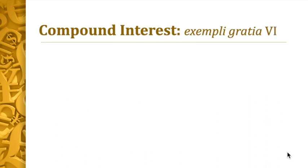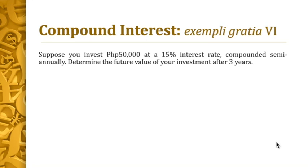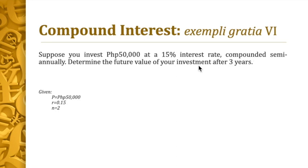Let's proceed to example six. Suppose you invest 50,000 pesos at a 15% interest rate compounded semi-annually. Determine the future value of your investment after three years. For the given: P is 50,000, r is 0.15, n is 2 because semi-annually means twice a year, and t is 3 years. What is asked is the future value F. You can pause the video now to answer.